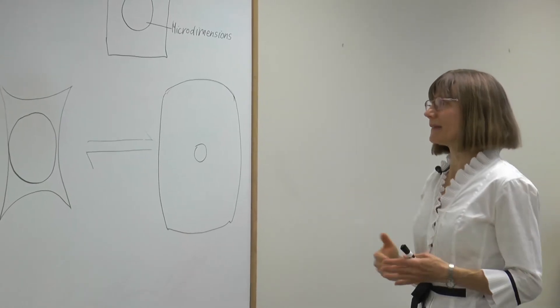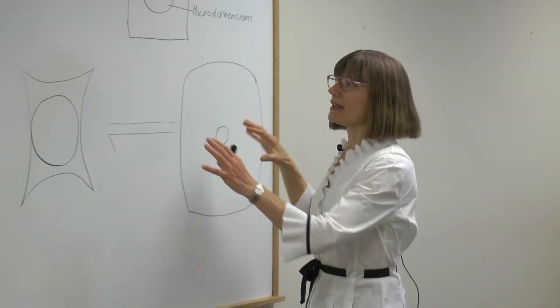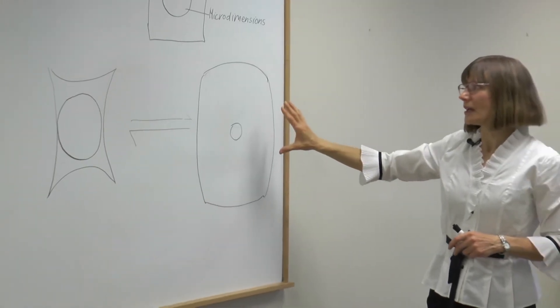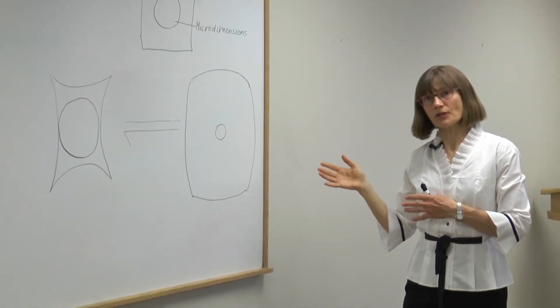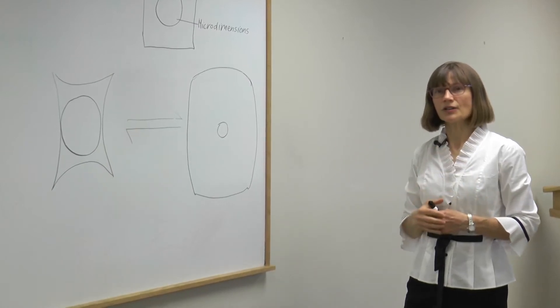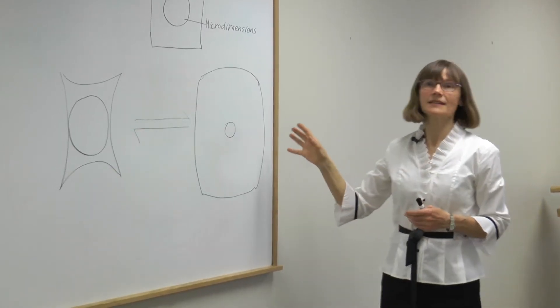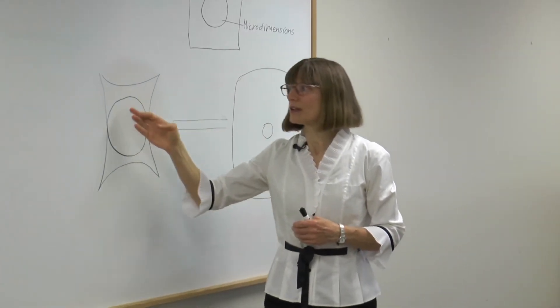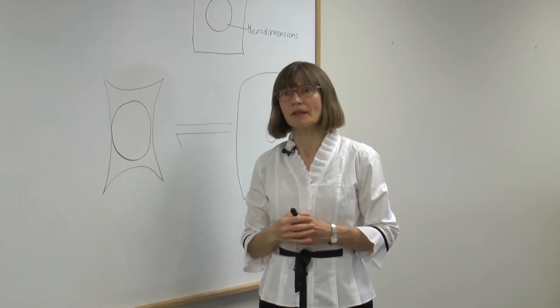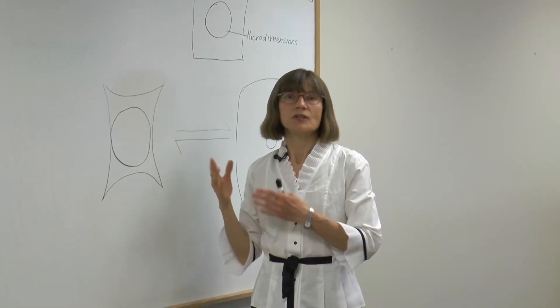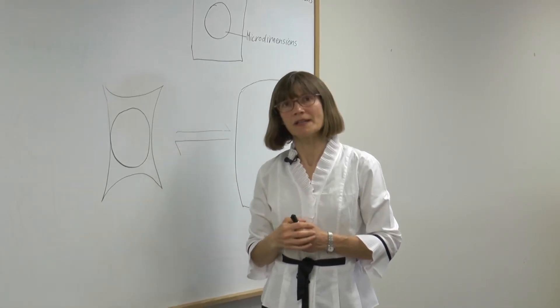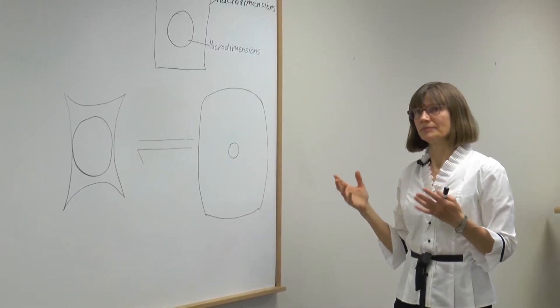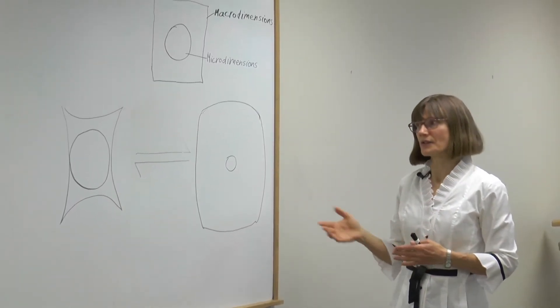During entanglement in the sister particles, in one, the macro dimensions would be enlarged. For experts, this is the up-spin state. And in the other particle, the micro dimensions would be enlarged, the so-called down-spin state. Of course, the changes are exaggerated for illustration.